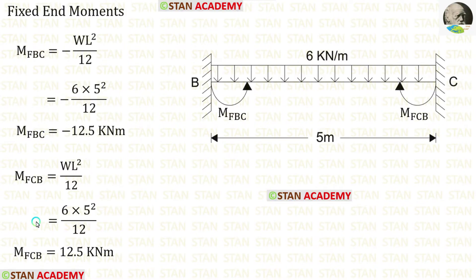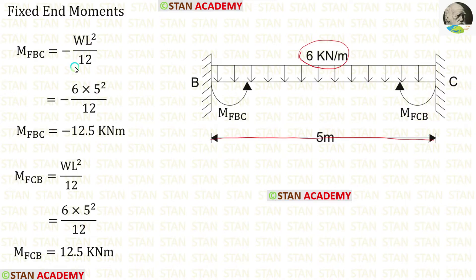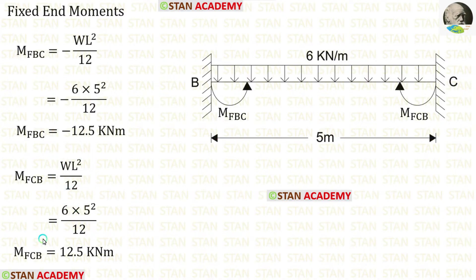Now let us find the fixed end moments in beam BC. There is a UDL of 6 kilonewton per meter acting for the full span. The formulas are minus W·L² / 12 and plus W·L² / 12. Applying W = 6 and L = 5, we obtain M_BC and M_CB.